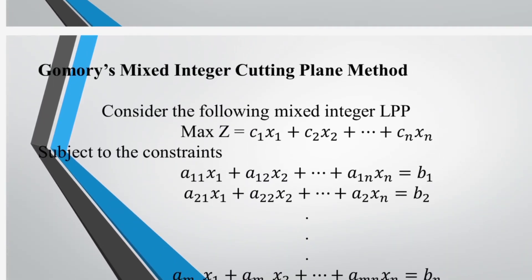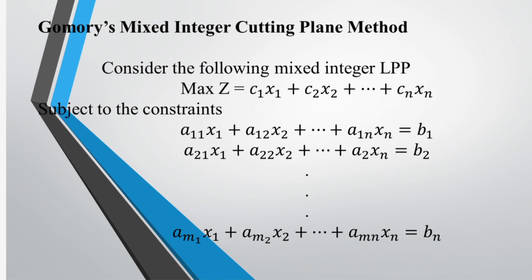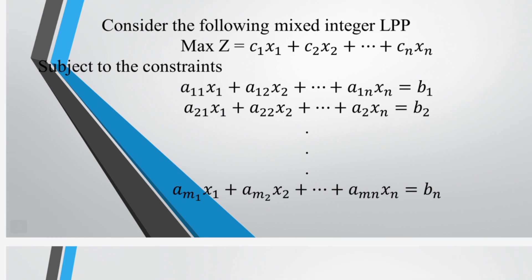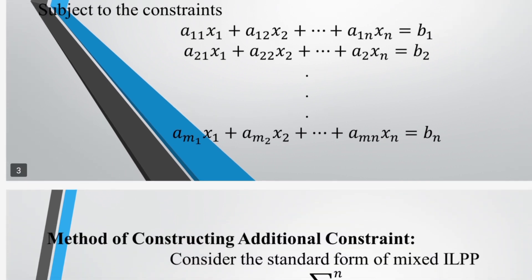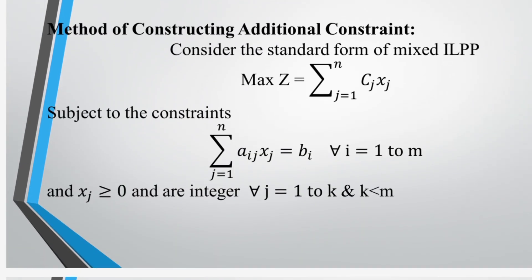The Gomory's Mixed Integer Cutting Plane method: consider the following mixed integer linear programming problem. Maximize Z equal to C1·X1 plus C2·X2 and so on up to Cn·Xn, subject to the constraints A11·X1 plus A12·X2 plus ... plus A1n·Xn equal to B1. Second constraint: A21·X1 plus A22·X2 plus ... plus A2n·Xn equal to B2. Similarly, AM1·X1 plus AM2·X2 plus ... plus AMn·Xn equal to Bm. The method of constructing additional constraints considers the standard form of mixed integer linear programming problem.